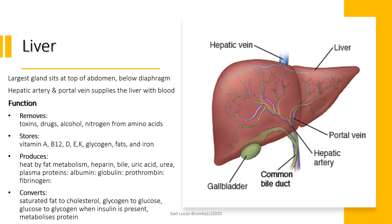The liver is an accessory organ of the digestive system — the largest gland, sitting at the top of the abdomen below the diaphragm. Hepatic is the Latin term referring to the liver; the hepatic artery and hepatic portal vein supply it with blood and nutrients. The functions of the liver are to remove, store, produce and convert different substances. It removes toxins, drugs, alcohol and nitrogen from amino acids. It stores vitamins A, B12, D, E and K — remembered as 'baked a dozen' — as well as glycogen, fats and iron.